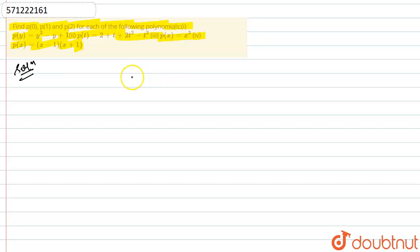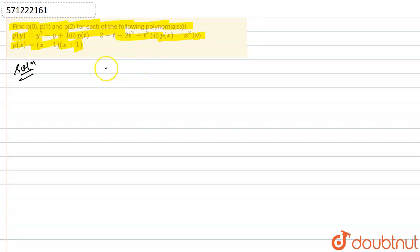What we will do is we will simply just put the value of these variables as 0, 1 and 2 for finding p(0), p(1) and p(2) respectively. So let us just see how we will do this.